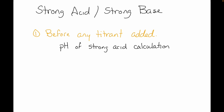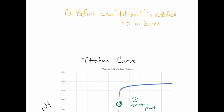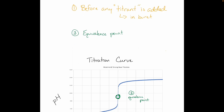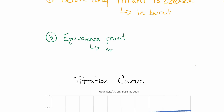Going back to our curve, we see there's a really sharp increase. The point in the very middle of that is what's called the equivalence point — this is our third region. Our third point is the equivalence point, and your equivalence point is where you have an equivalent amount of acid to base. So the equivalence point means moles of acid equals moles of base — you have exactly as many moles of acid as you have base.